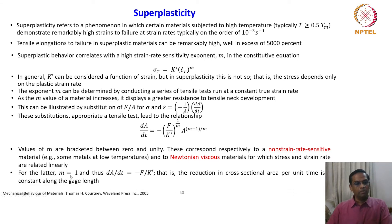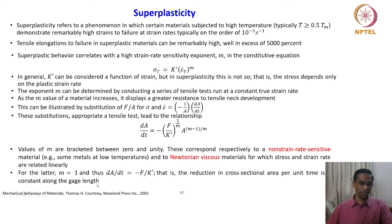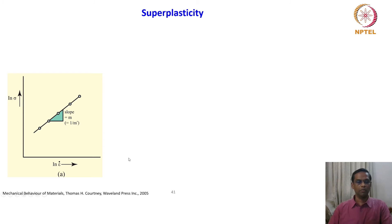For the latter case where m equals 1, dA/dt equals minus F over k prime. That is, the reduction in cross-sectional area per unit time is a constant along the gauge length — there is no necking. This is a very interesting point: when m equals 1, the cross-sectional area reduction per unit time is constant along the gauge length.